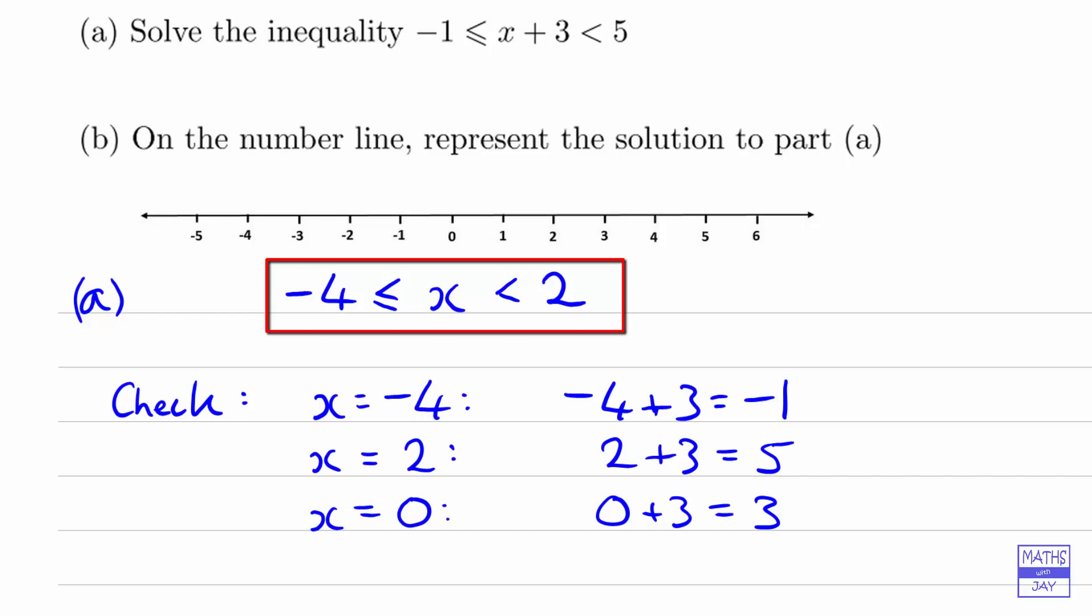You can check any other number in between -4 and 2, it doesn't have to be a whole number. You could try -2½, you could try two-thirds, anything you like, and it should work. What shouldn't work though is any number that's less than -4 or any number that's greater than 2.